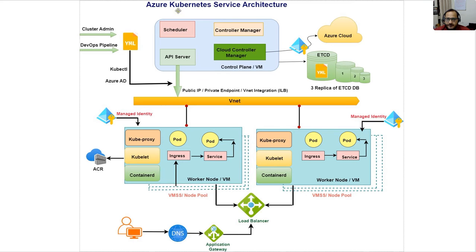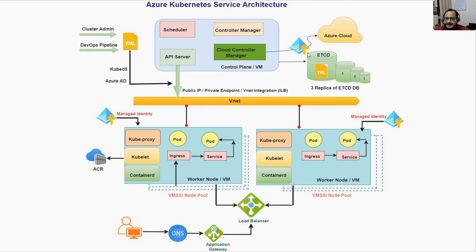As per the AKS architecture, we'll discuss the control plane first — the blue part you can see here. This master control plane has five major components: the first is the API server, then the scheduler, then the controller manager, the fourth is the cloud controller manager, and the last is etcd. Let's understand each component individually.